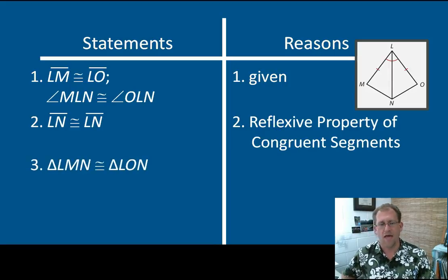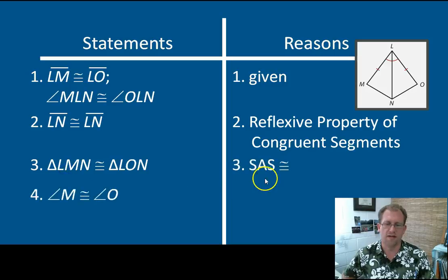And so now I say that those two triangles are congruent because of side, angle, side. And now I can say that M is congruent to O because corresponding parts of congruent triangles are congruent. Not too hard.